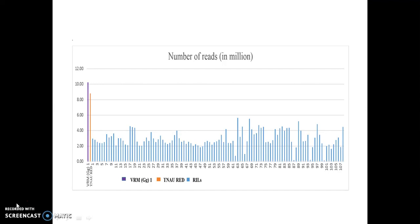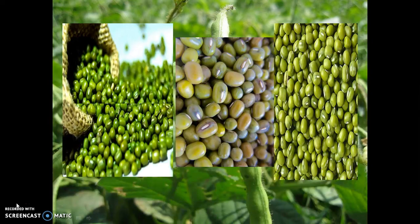SNPs were found and they were filtered in such a way that SNPs that were non-existent in the parents were excluded. Prior to grouping, chi-square tests were performed to eliminate SNPs that deviated from the expected 1:1 ratio. Markers were named based on the chromosome details and physical positions on the mungbean reference genome, Vigna radiata 1.0.